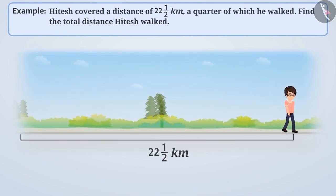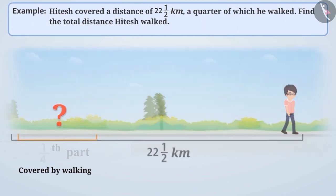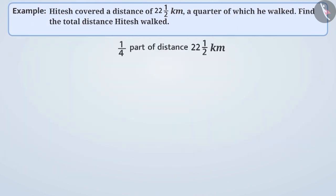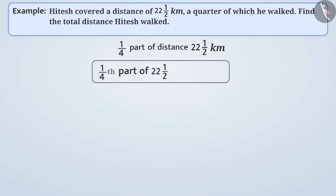Next example. Hitesh covered a distance of 22 and a half kilometers, a quarter of which he walked. Find the total distance Hitesh walked. The example shows that Hitesh walked a quarter of the total distance of 22 and a half kilometers. We have to multiply 22 and a half by 1 by 4 to get one fourth part of 22 and a half. Hence, the distance covered by Hitesh is equal to 1 by 4 into 22 and a half.